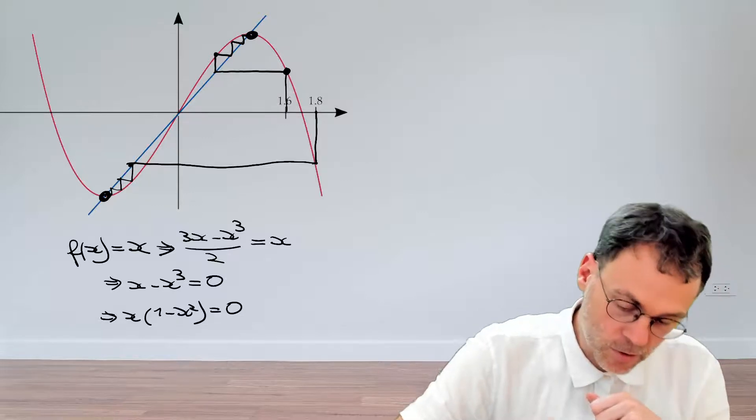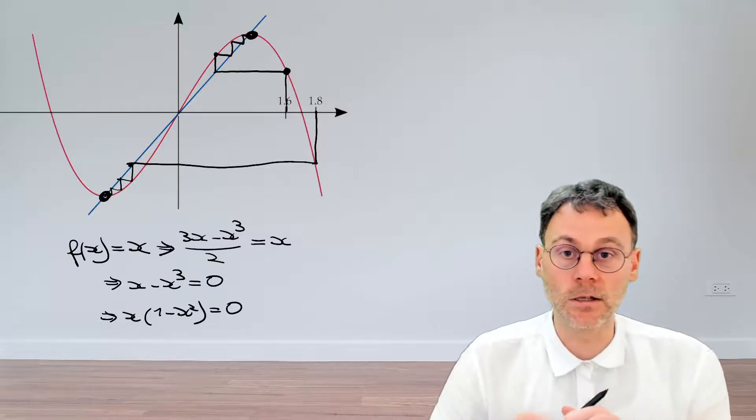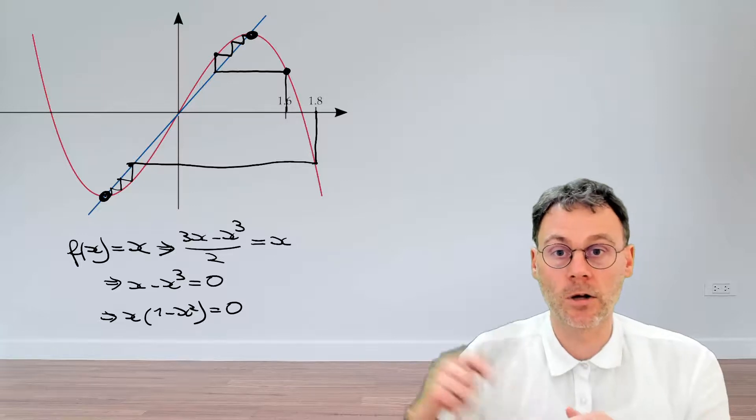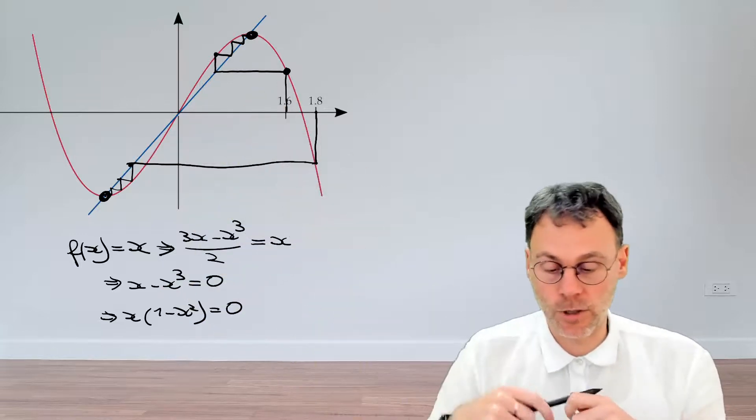equals 0. So you can clearly see that the three different fixed points are minus 1, 0, and plus 1.